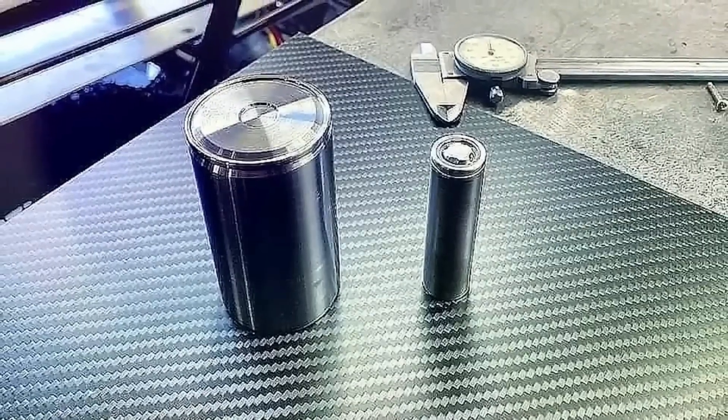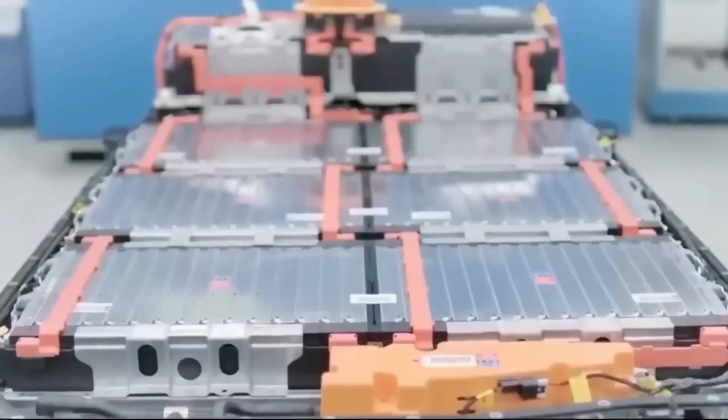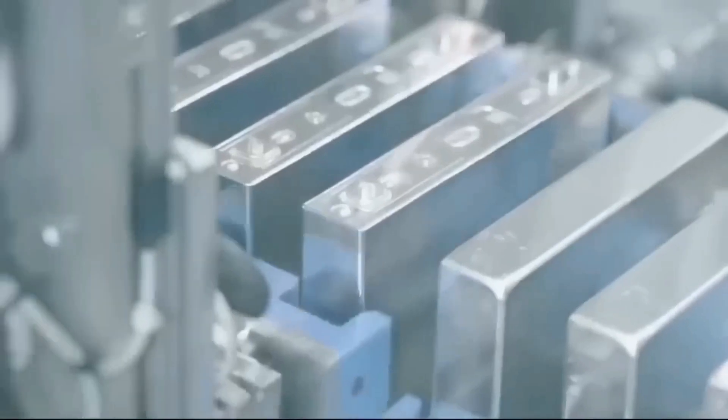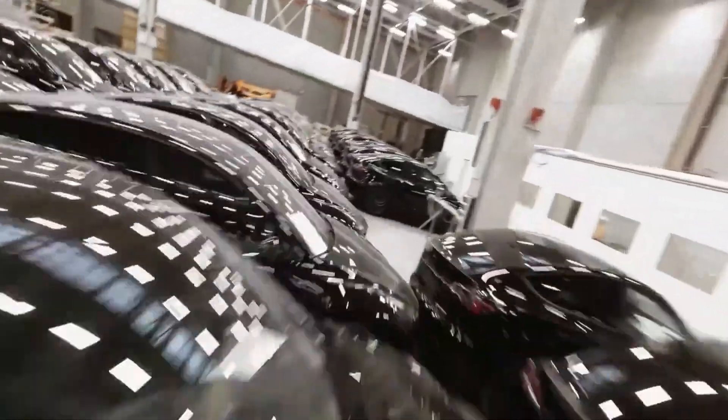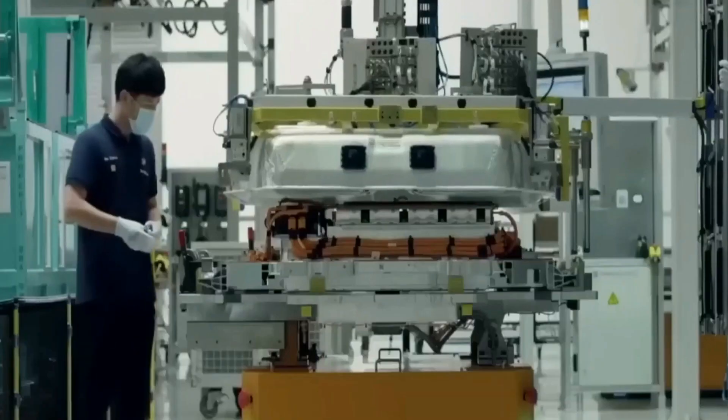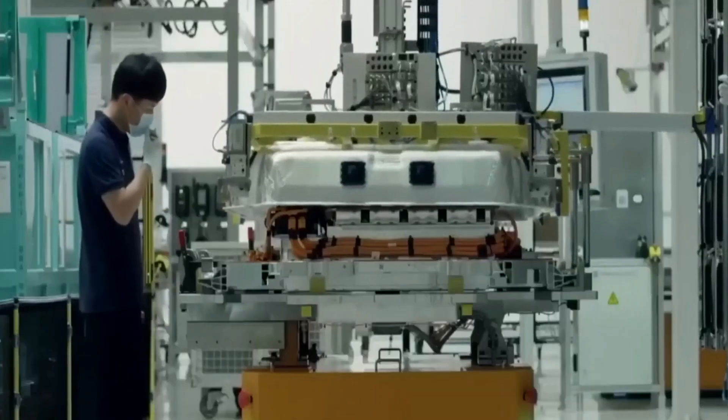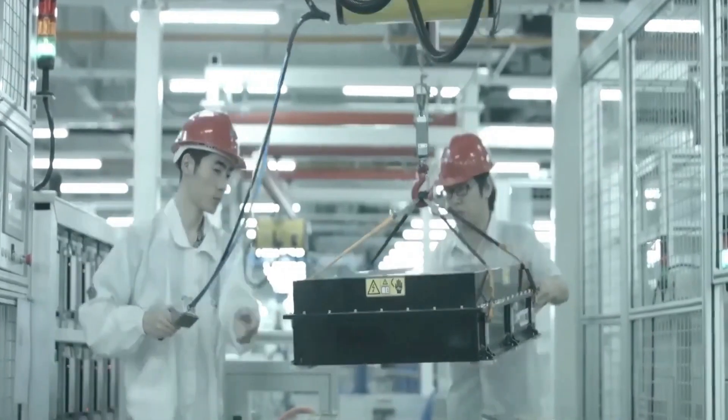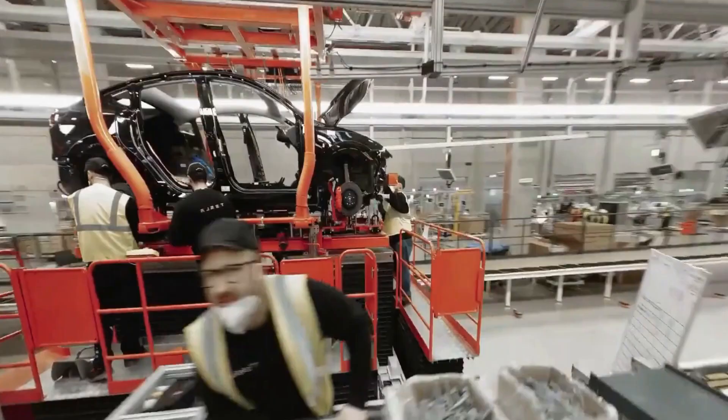However, this integration also presents challenges as it becomes difficult to repair individual cells in the Model Y's 4680 structural pack, now sealed as part of the chassis. To meet its target price point, Tesla must now master the trickier aspect of 4680 battery cost savings: dry electrode production.